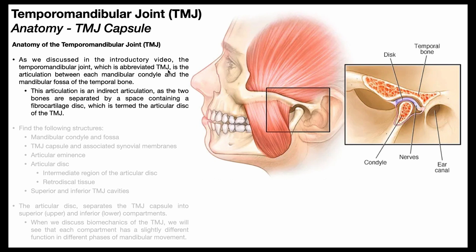More specifically, the TMJ is an articulation between the mandibular condyle — you can see that inferiorly — and the mandibular fossa superiorly. The mandibular fossa is a part of the temporal bone.